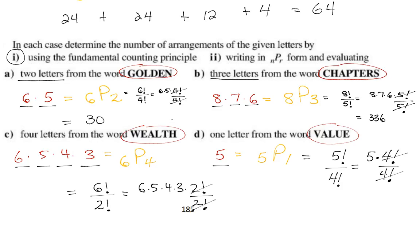If you know how to rearrange letters in a word, you could do any problem — because what if it was people lining up for a picture? Jeff could be on the left, Olaf on the right, Lenny in the middle. You could give a letter to represent anything and then just rearrange letters. If you know how to rearrange letters, you could do any problem.